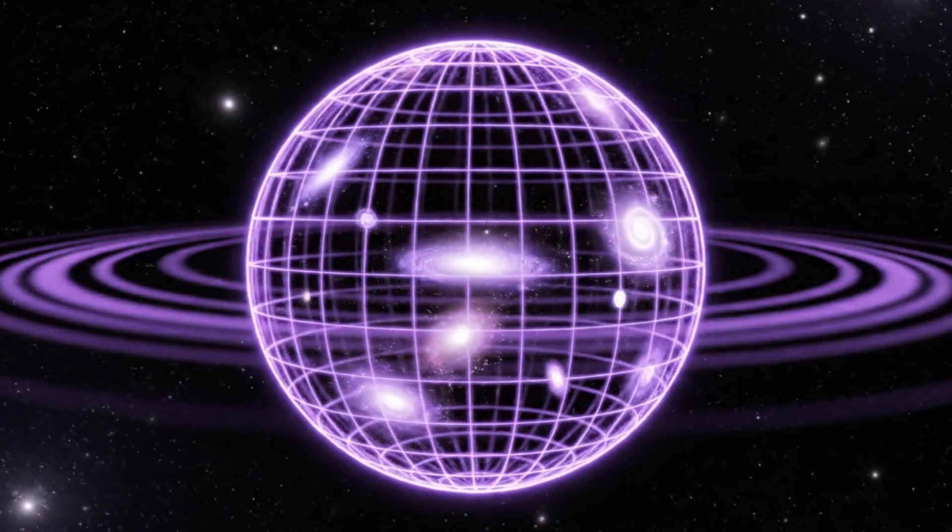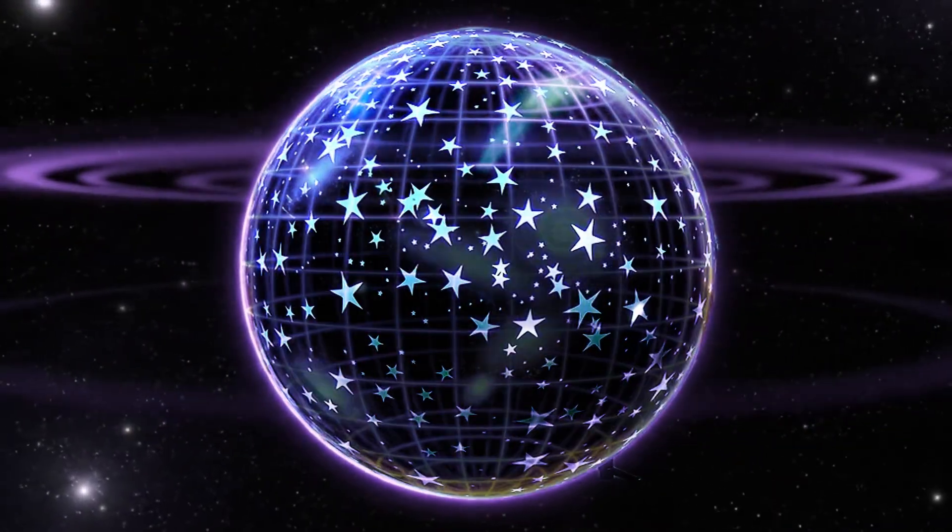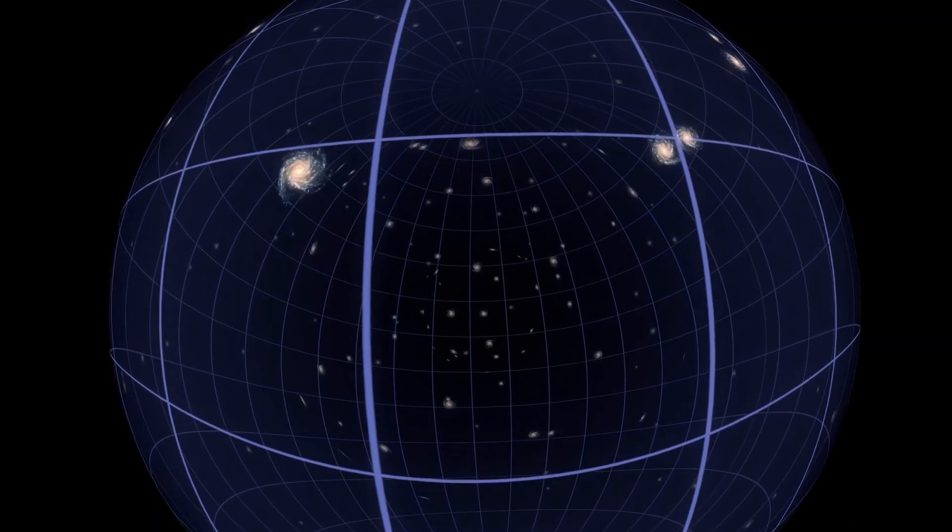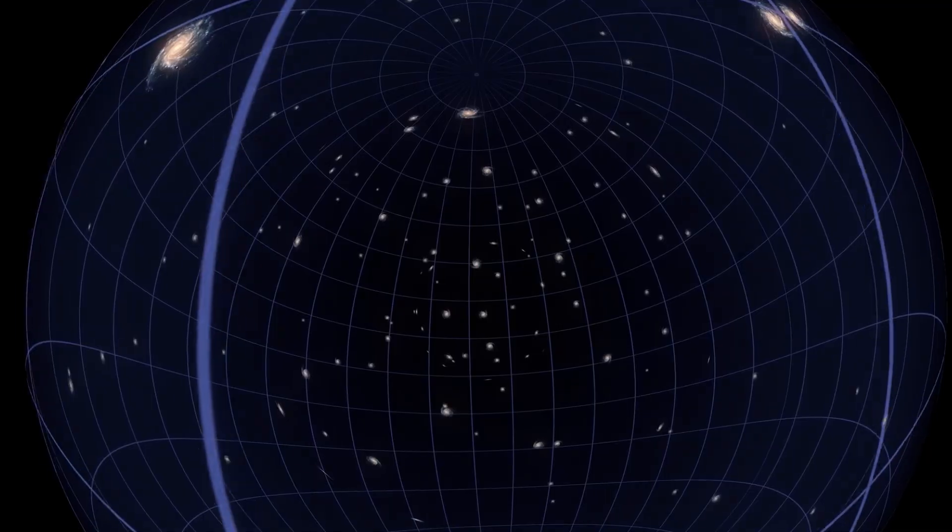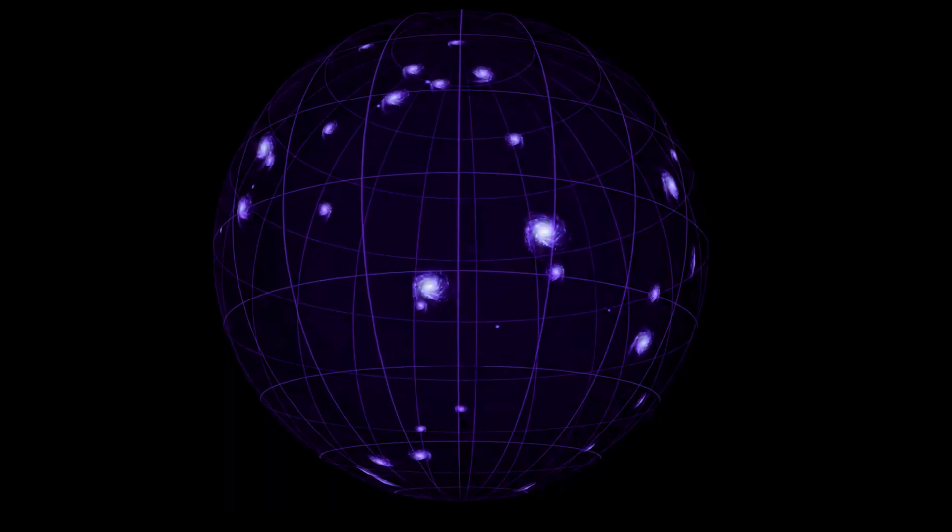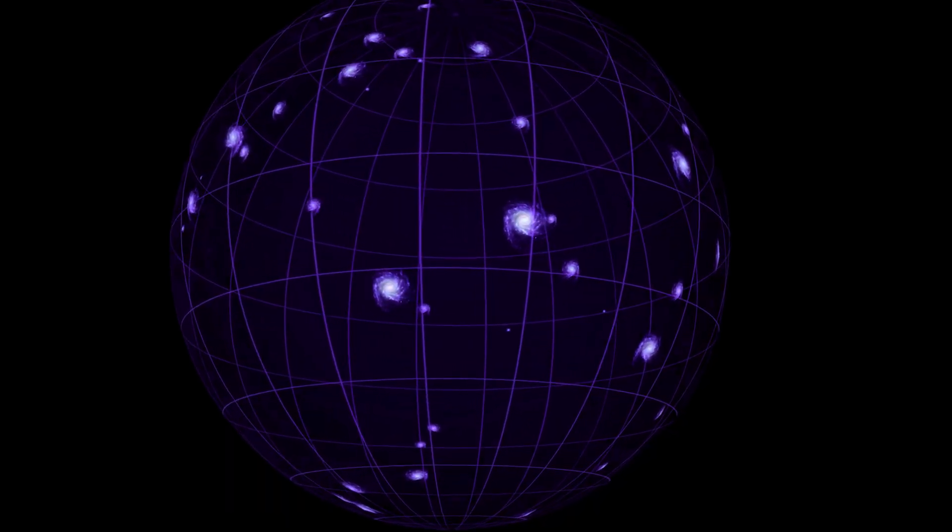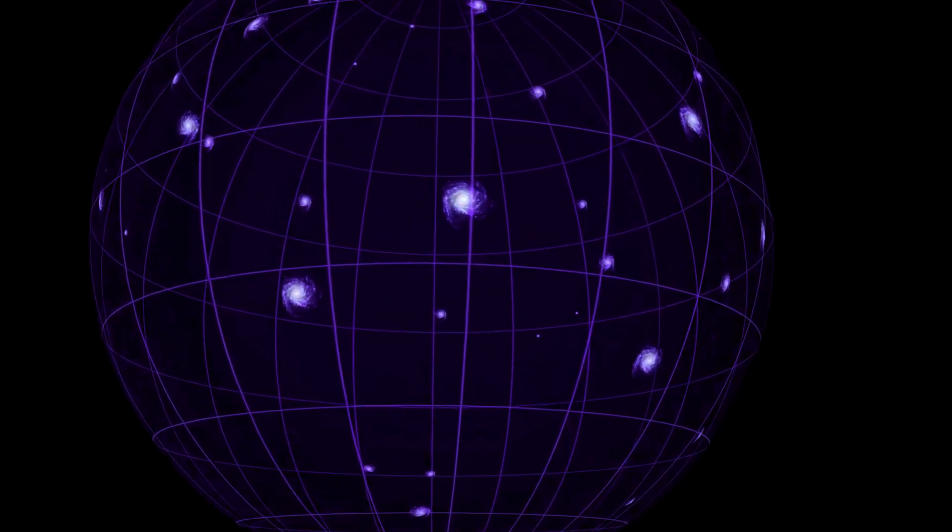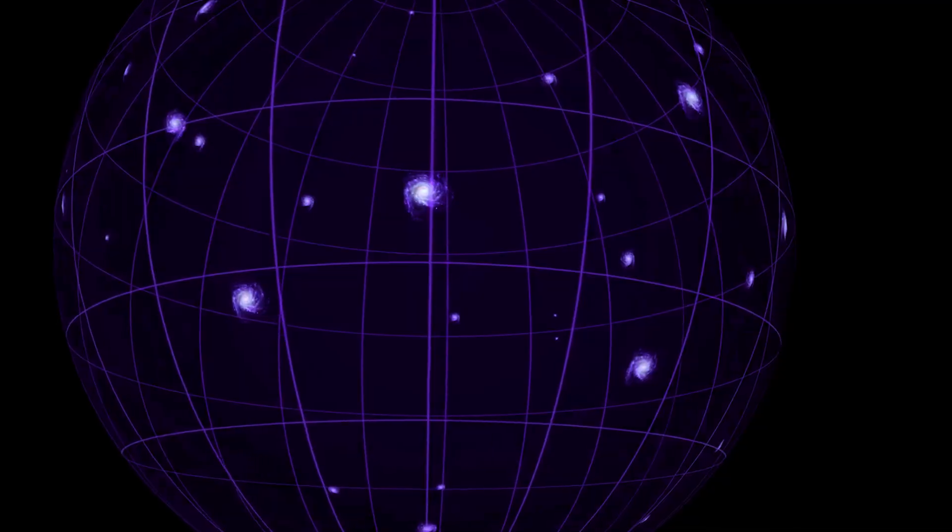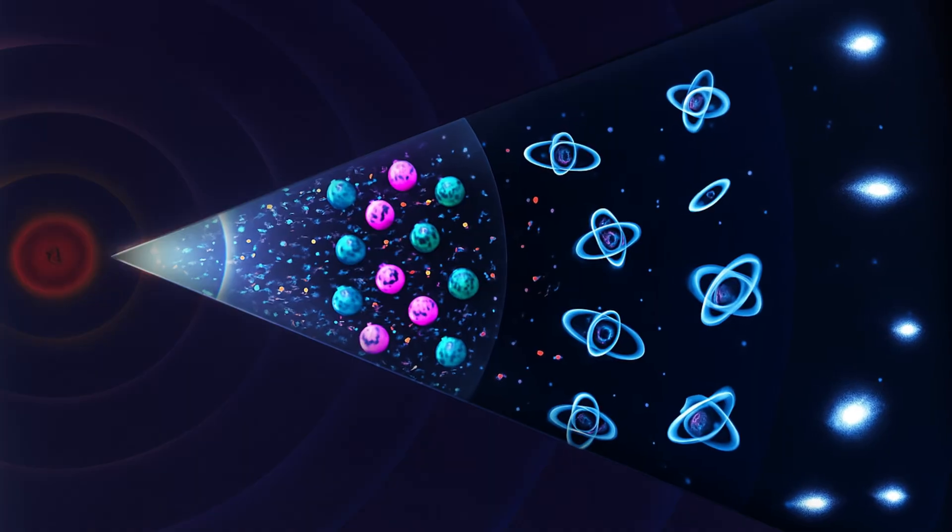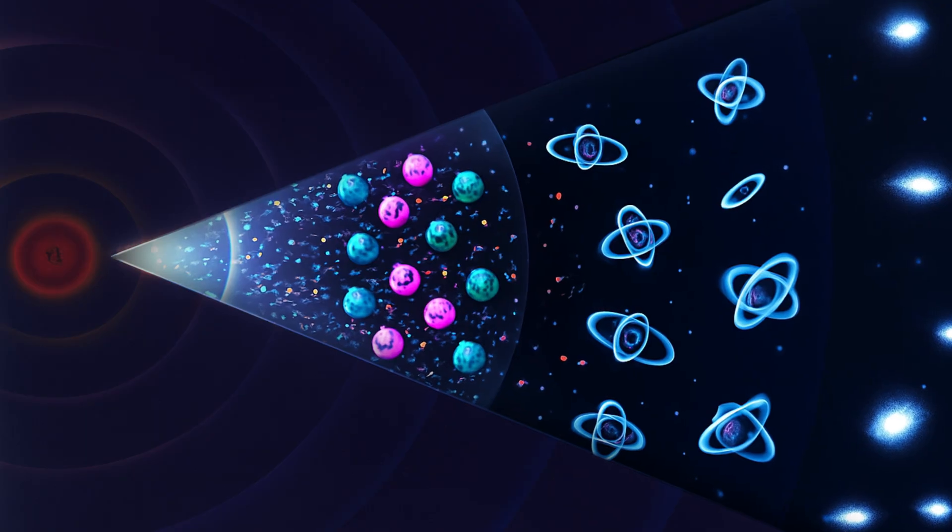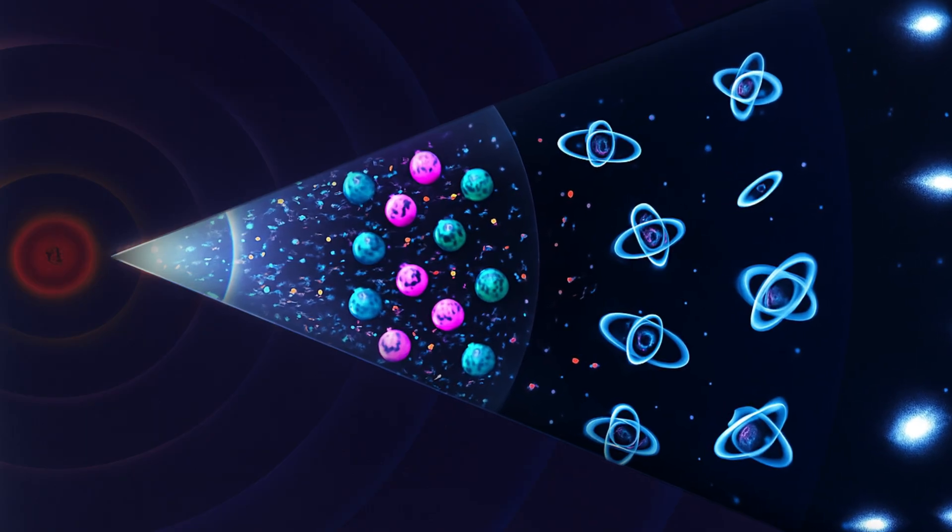Scientists believe there are two main possibilities. One, the universe is finite but unbounded. Like the balloon's surface, it curves back on itself. Or two, it's infinite. Going on forever in every direction. If it's finite, you could, in theory, travel far enough in one direction and end up back where you started. If it's infinite, there's no edge at all. The expansion just increases the distance between everything endlessly.